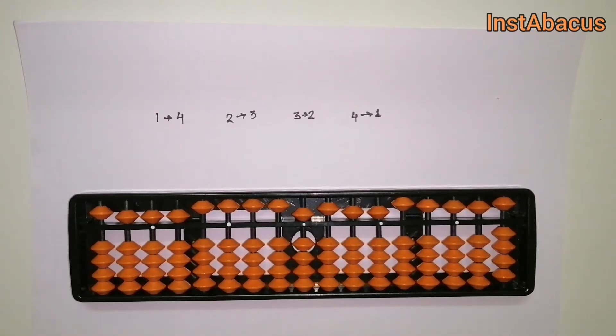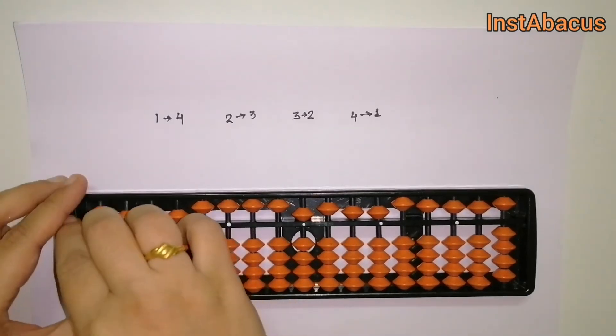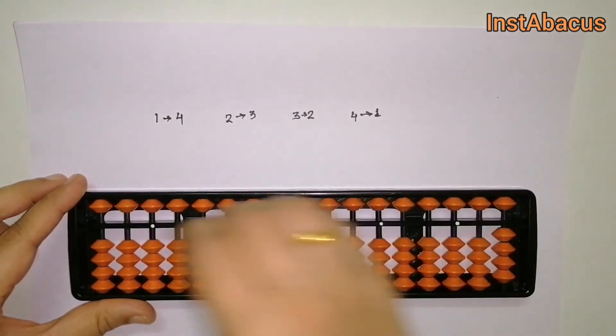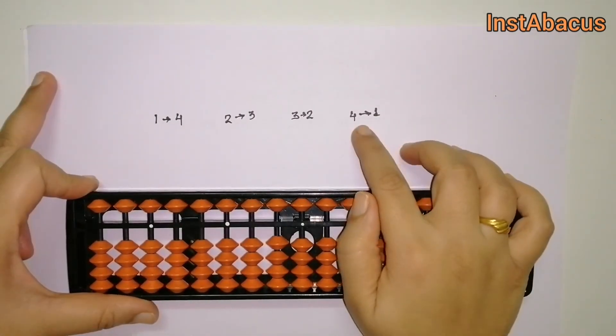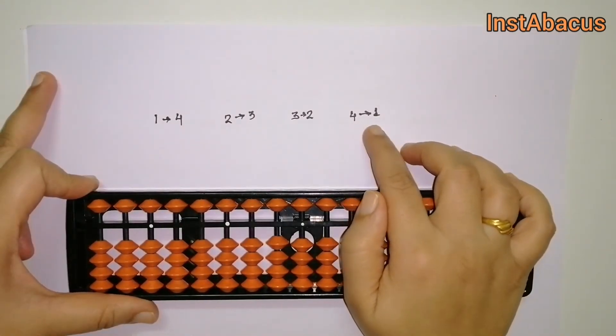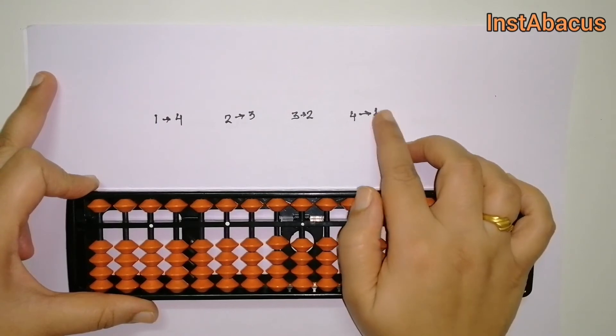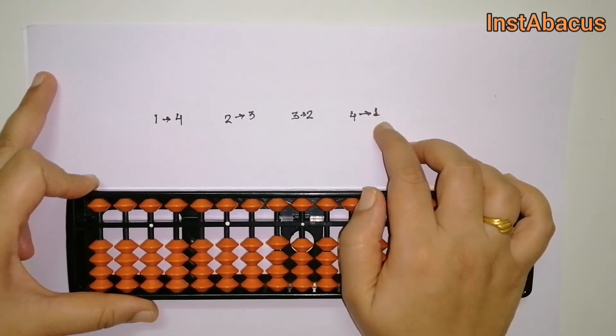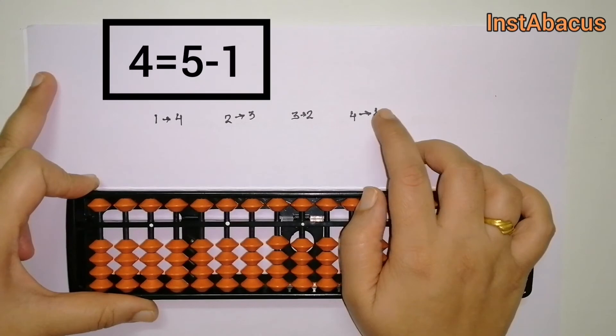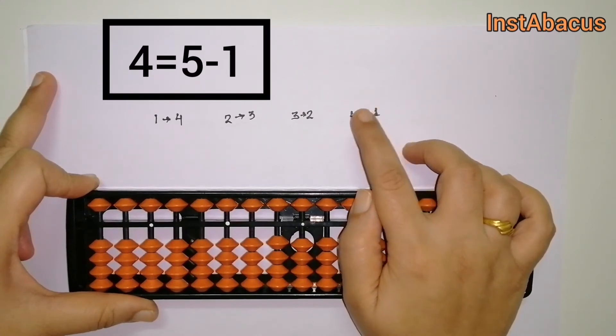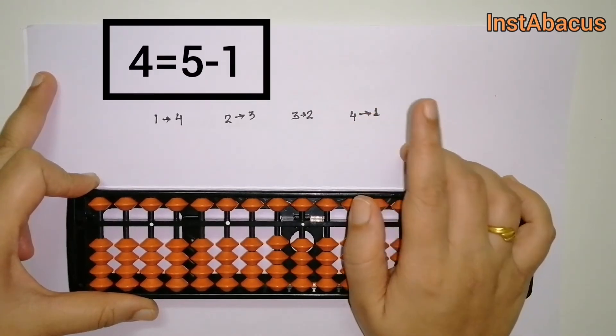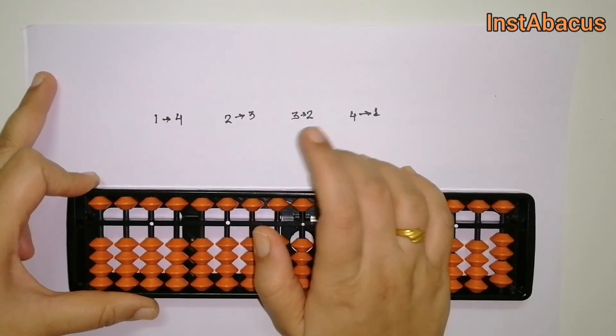Now we are going to see how to use them. Let's clear our abacus here. For adding four, we are going to use the small friend of four, that's one, in the form of five minus one, because four is also equal to five minus one.